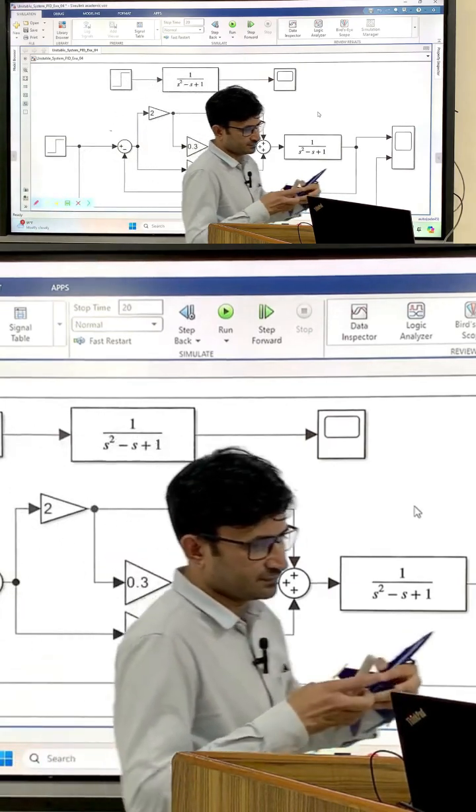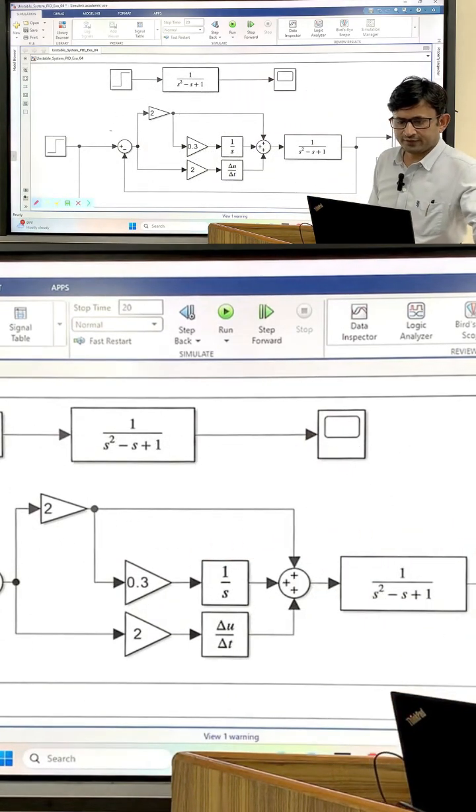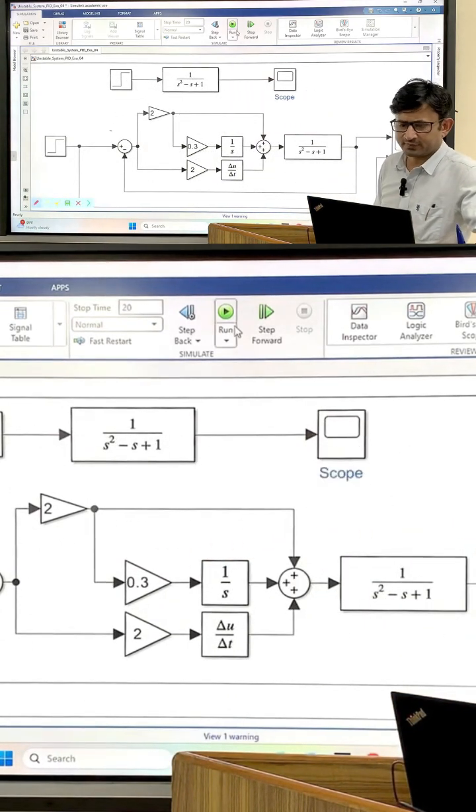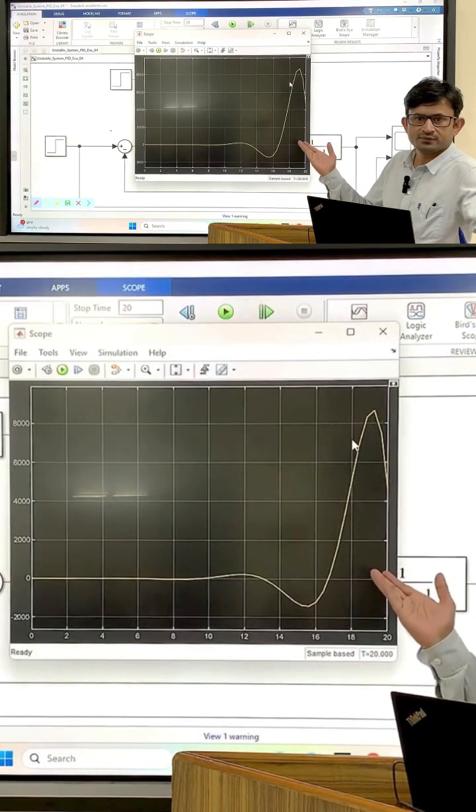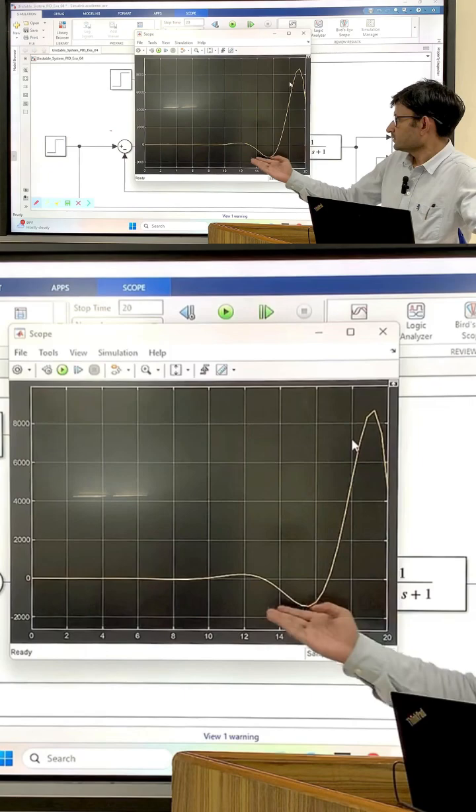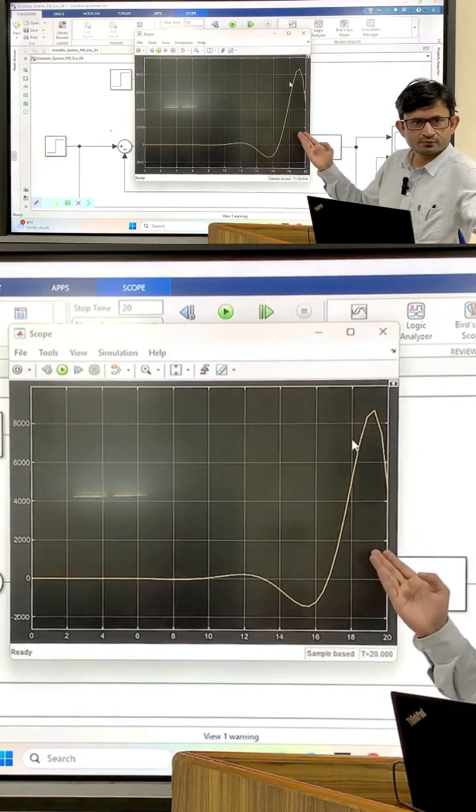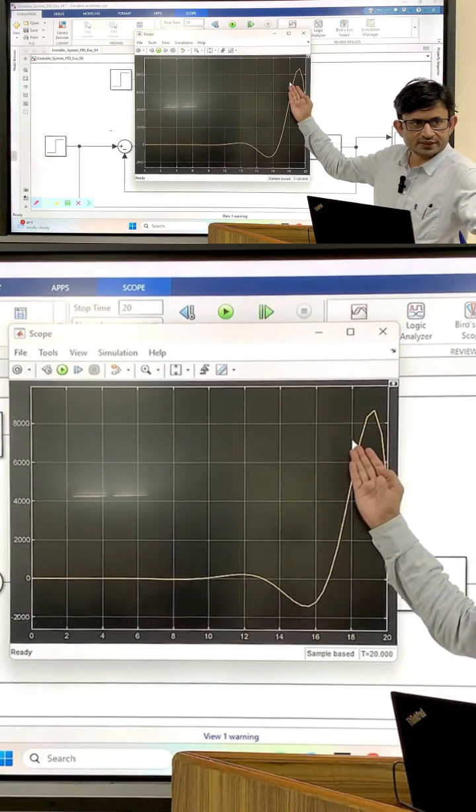So we will see. You can see when I hit the run button you will see some kind of divergence. As expected, this is not a controlled response, it is diverging in nature.